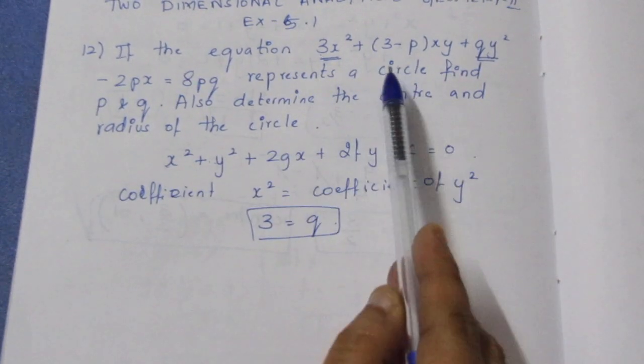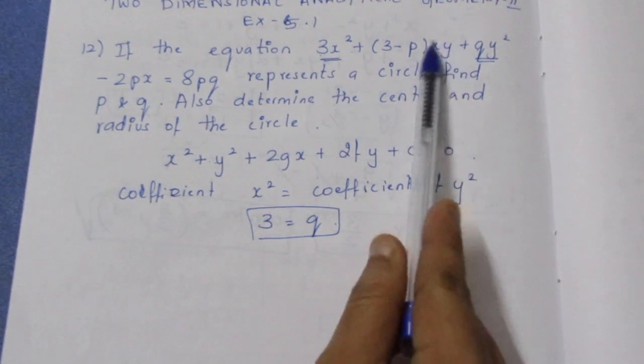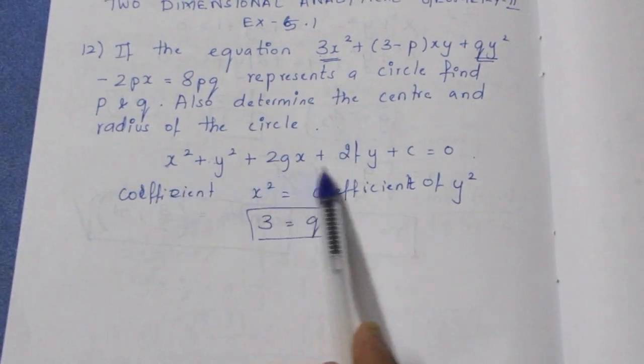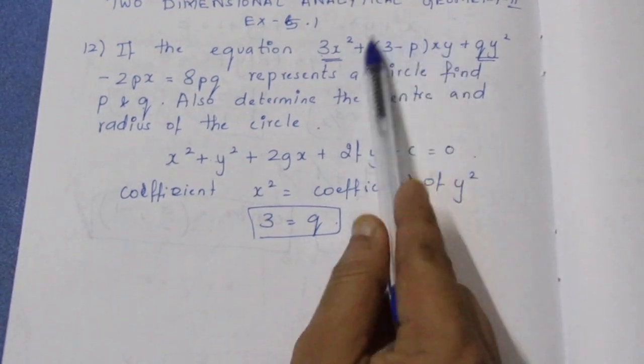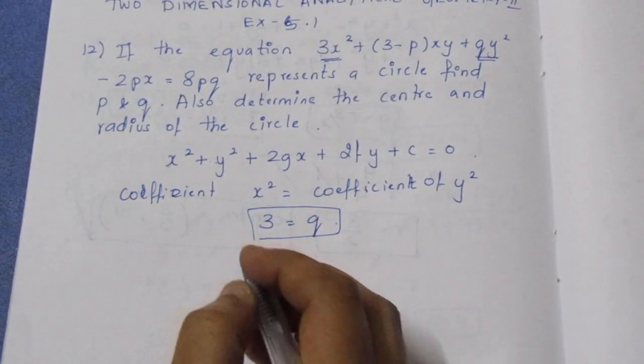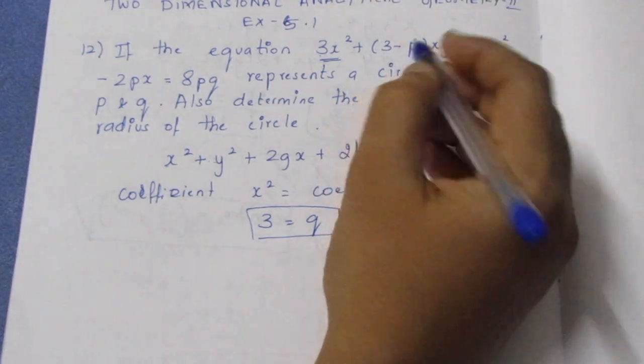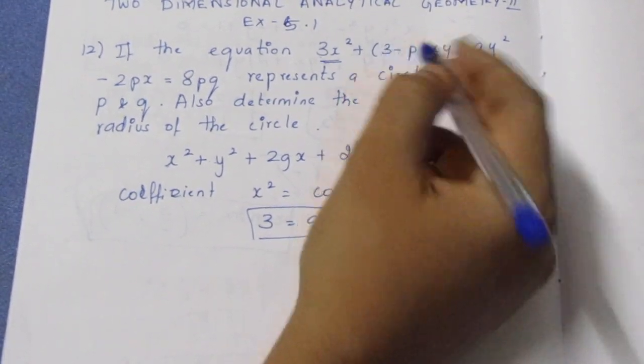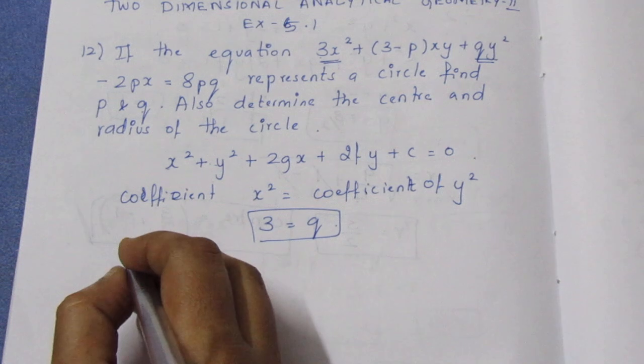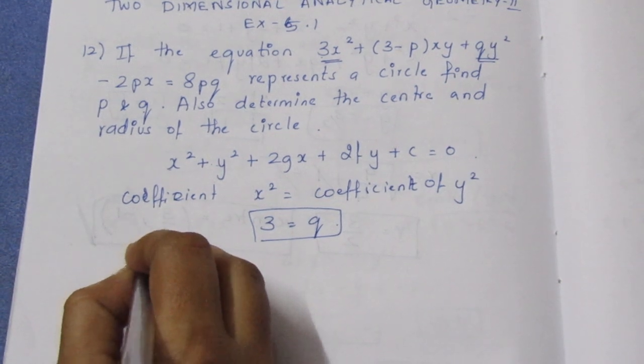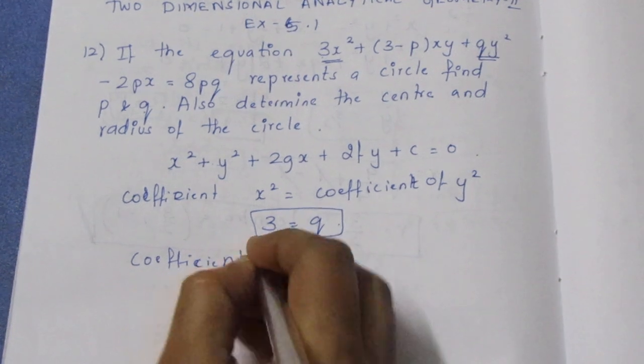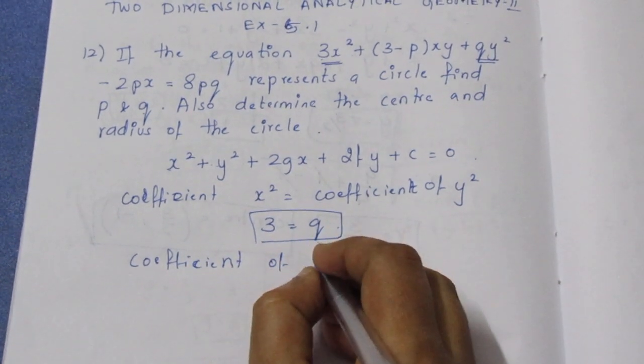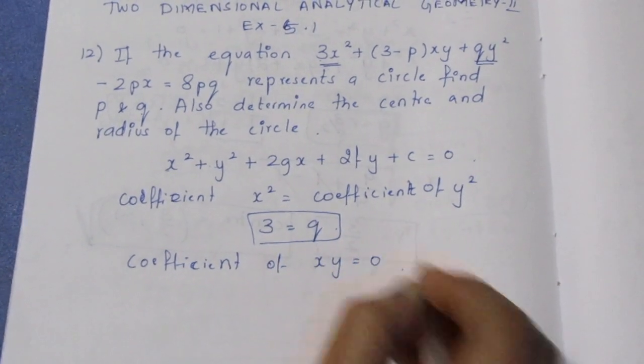The second condition is that the coefficient of xy is equal to 0. So, one of the key terms is that the coefficient of xy is equal to 0.